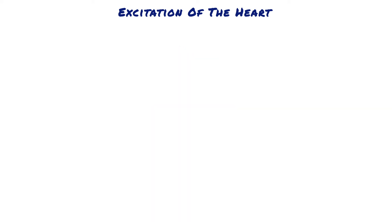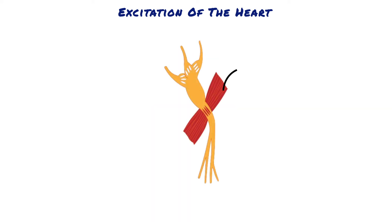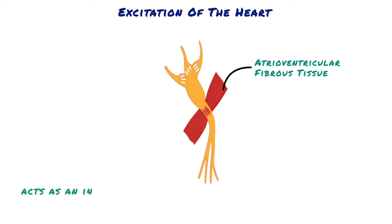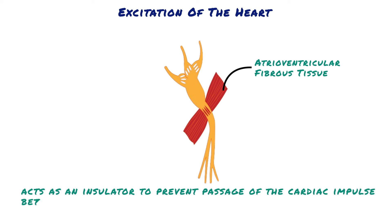Everywhere except at the AV bundle, the atrial muscle is separated from the ventricular muscle by a continuous fibrous barrier. This barrier normally acts as an insulator to prevent passage of the cardiac impulse between atrial and ventricular muscle through any other route besides forward conduction through the AV bundle itself.